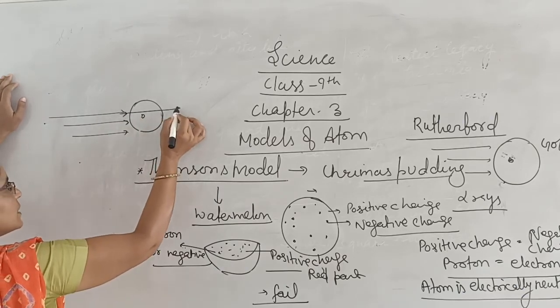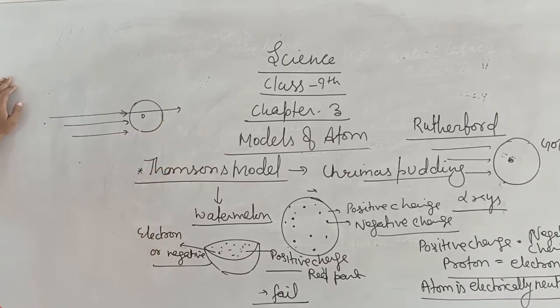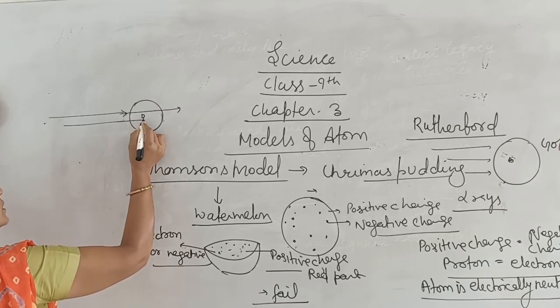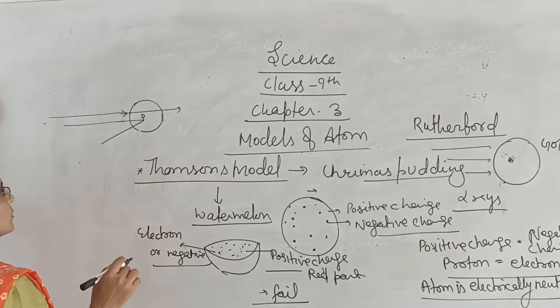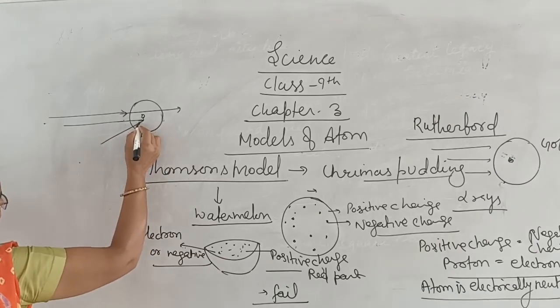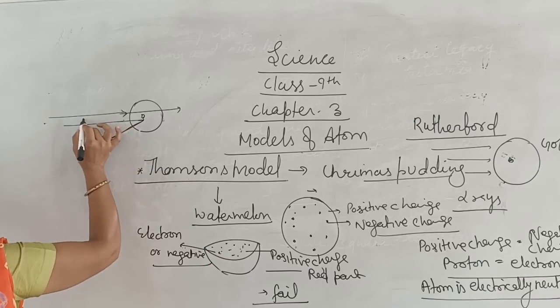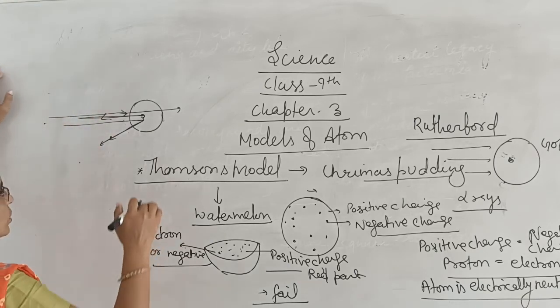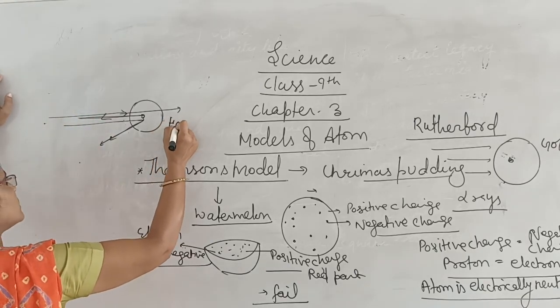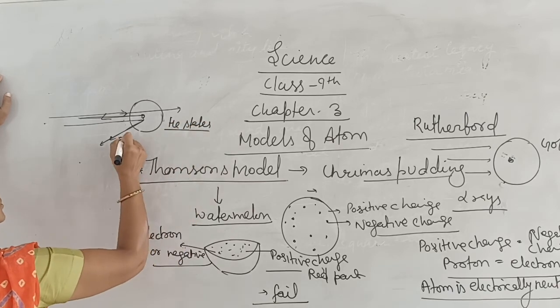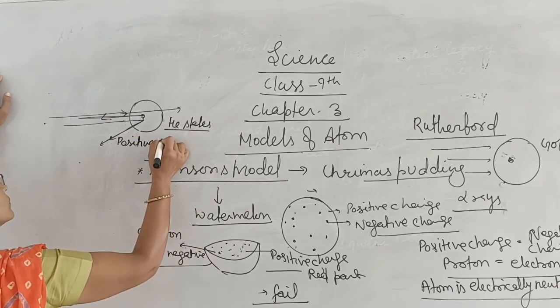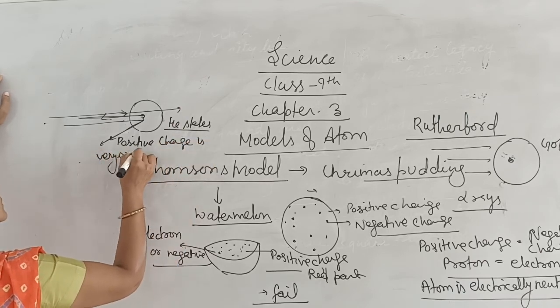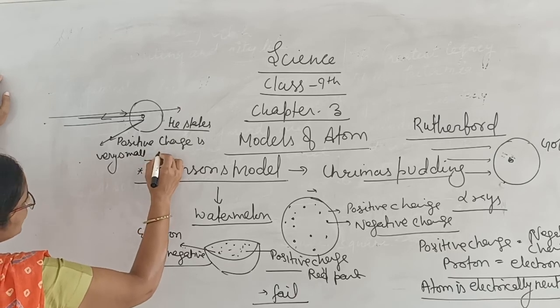Some rays passed clearly through and moved to the other side. Some rays struck the center and returned back after reflection. One returned back on the same path. On this basis, he states that positive charge is very small and accumulates in the center.